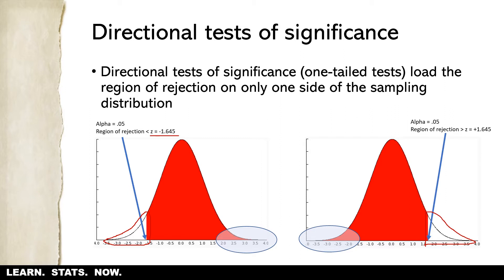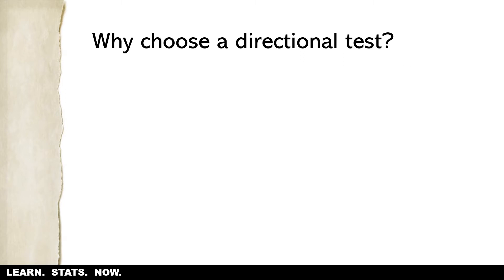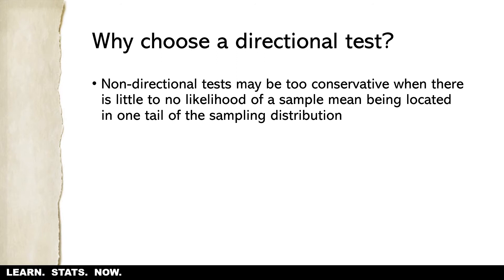There must be certain conditions that have to be met in order to justify a single-sided one-tailed test or a directional test of significance. The problem is that non-directional two-tailed tests may be too conservative when there is little to no likelihood of a sample mean being located in one tail of the sampling distribution. Here's a fun example: let's say we're interested in measuring people's happiness.